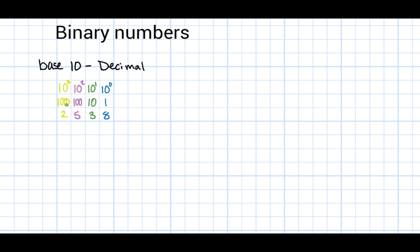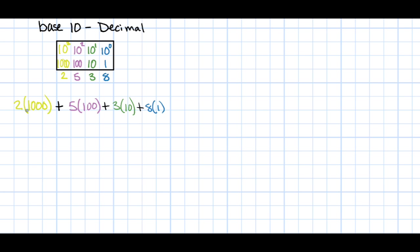In a base 10 number system, every number from 0 to 9 is available to use. In our example, we see the first number 2 and we know that it represents how many thousands there are. Likewise, we see that there are 5 hundreds, 3 tens, and 8 ones. The numbers 2, 5, 3, and 8 are called weights. We decode numbers by taking the weights and multiplying them with their corresponding place value, then we add up all of those products.